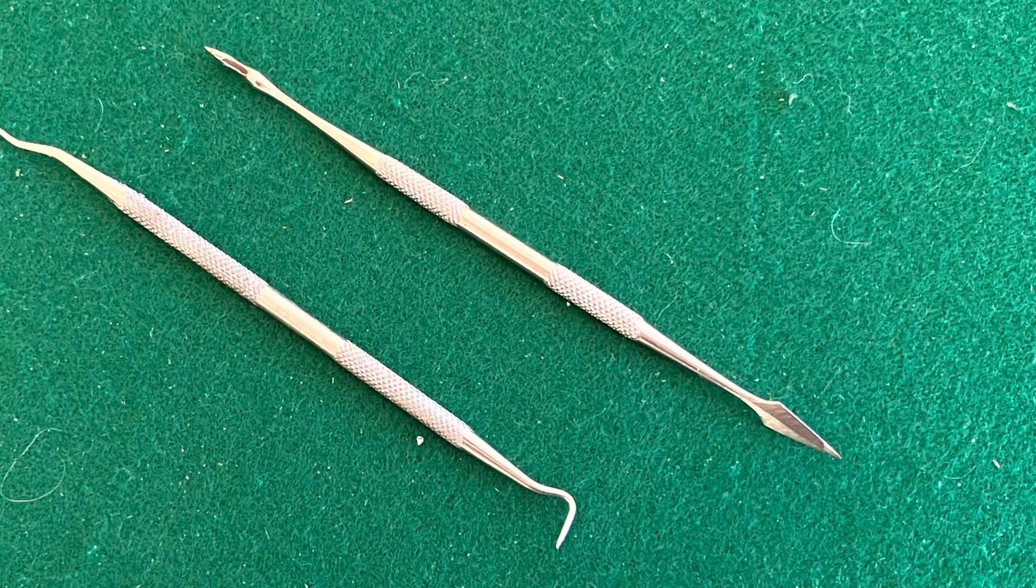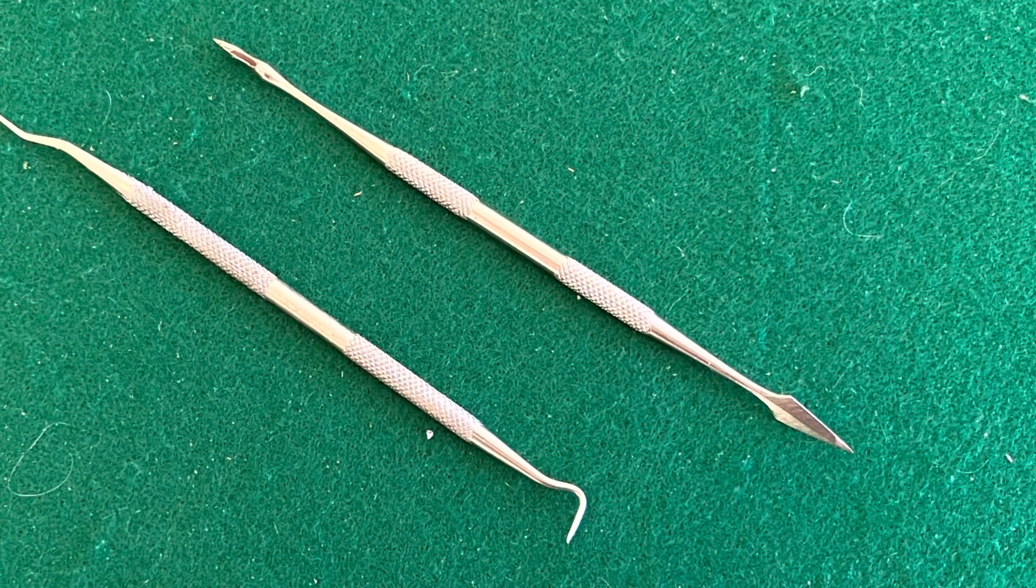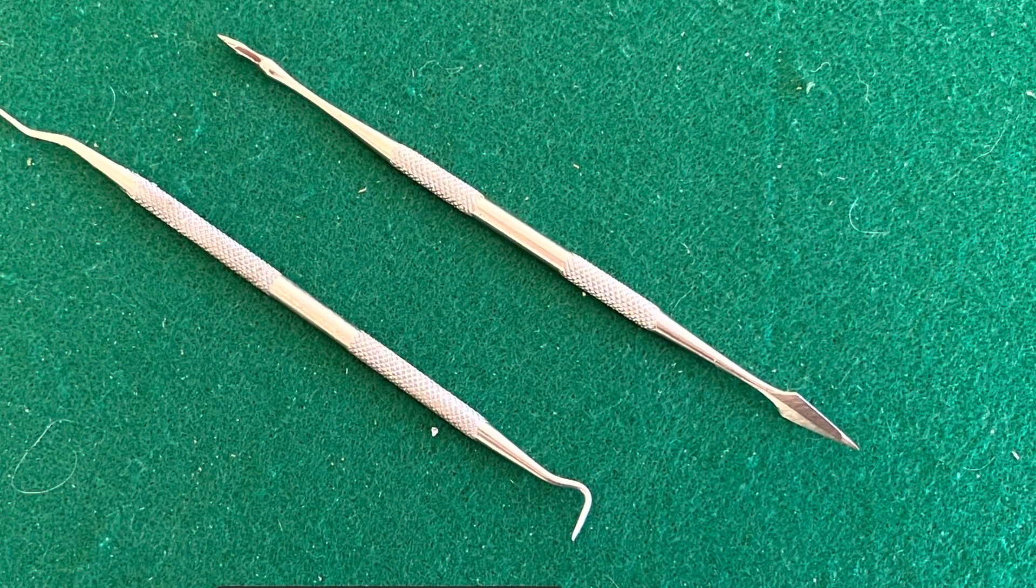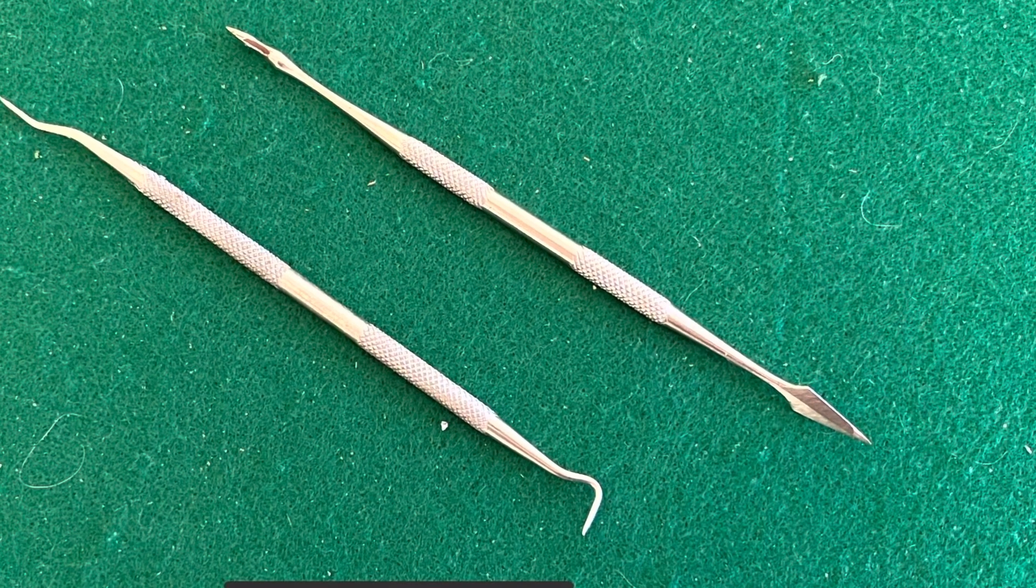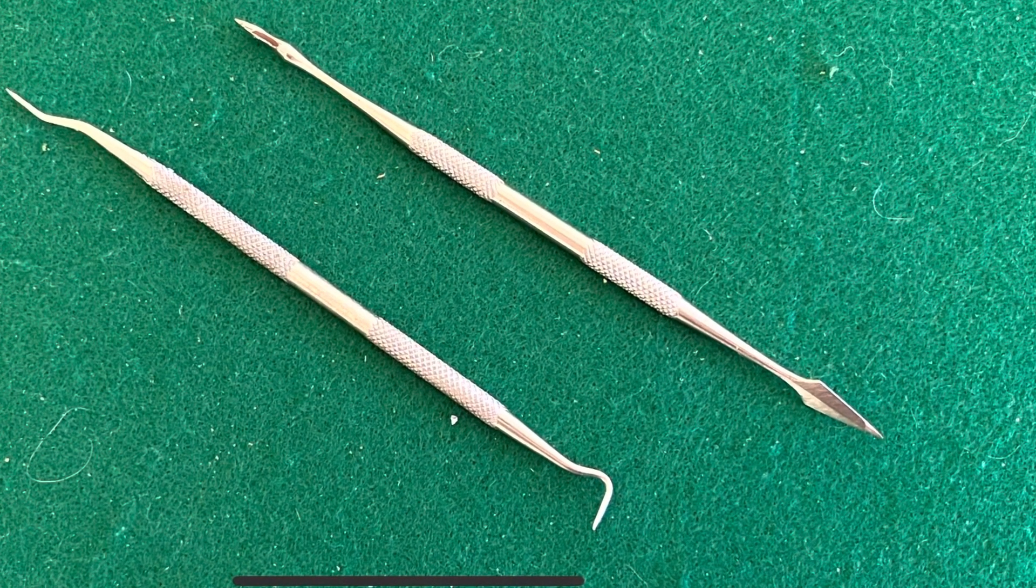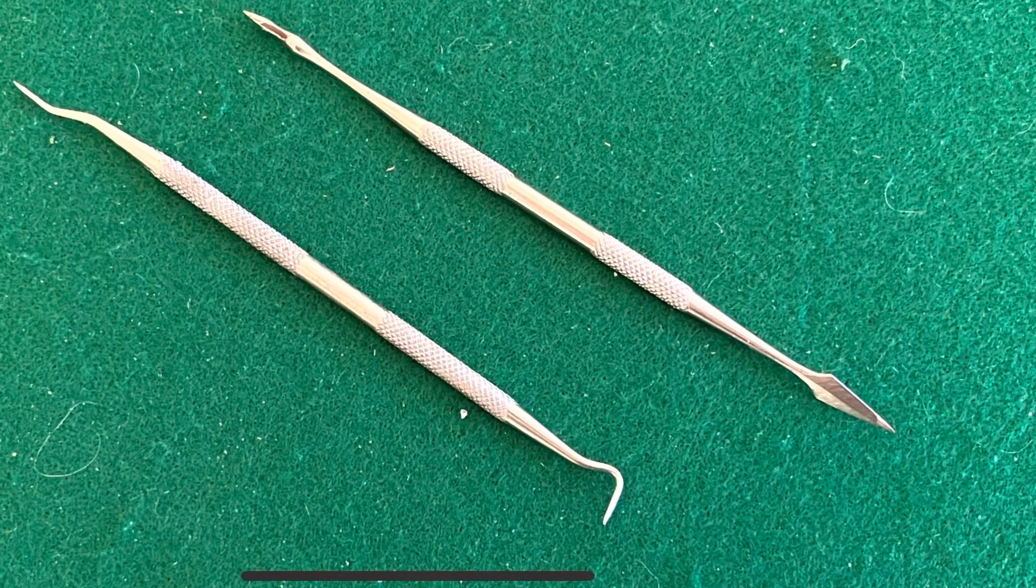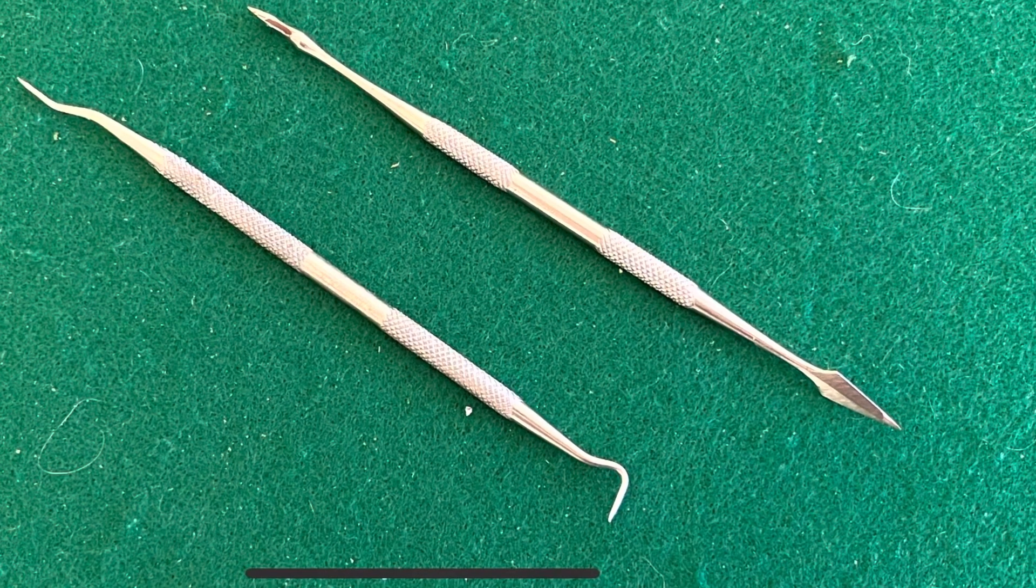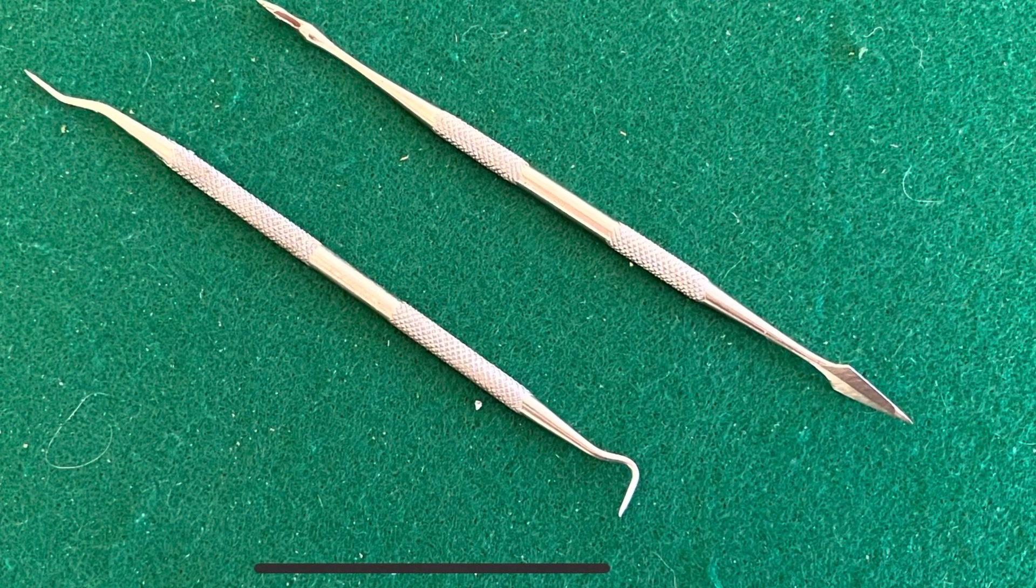When it comes to adding detail to the sculpting material whether it's green stuff or something else, I like tools like this. You can find these tools online or at various hobby shops but they kind of look like dental tools and they're really good for adding in various details. You can of course use an exacto knife or something like that but having a set of these can be pretty handy.